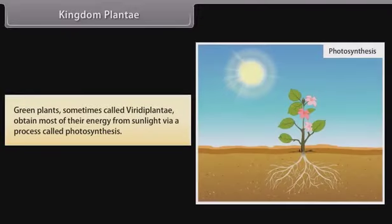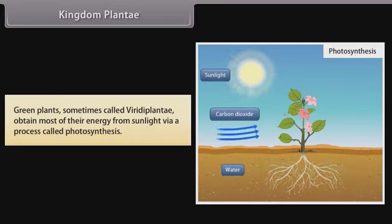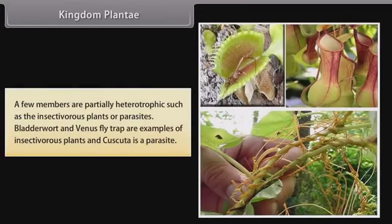Green plants, sometimes called Viridae Plantae, obtain most of their energy from sunlight via a process called photosynthesis. A few members are partially heterotrophic, such as insectivorous plants or parasites. Bladderwort and Venus flytrap are examples of insectivorous plants, and Cuscuta is a parasite.